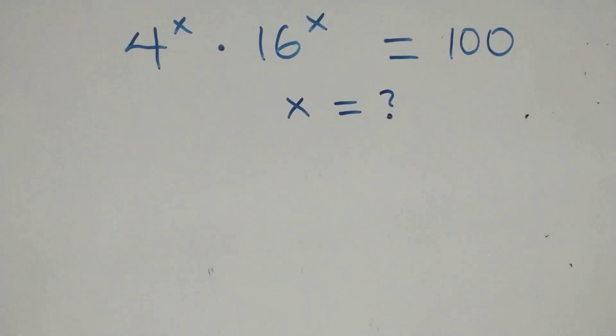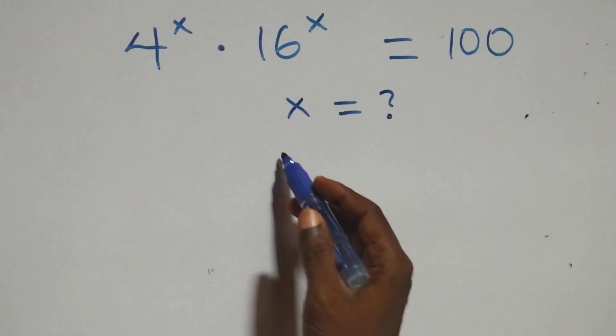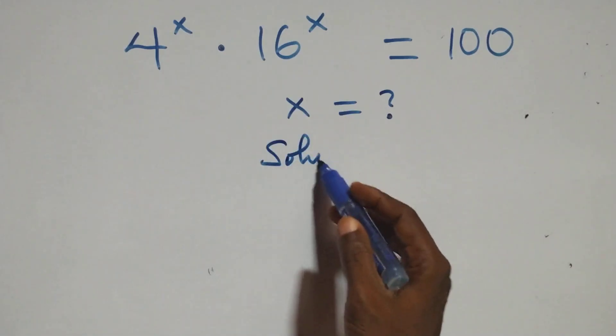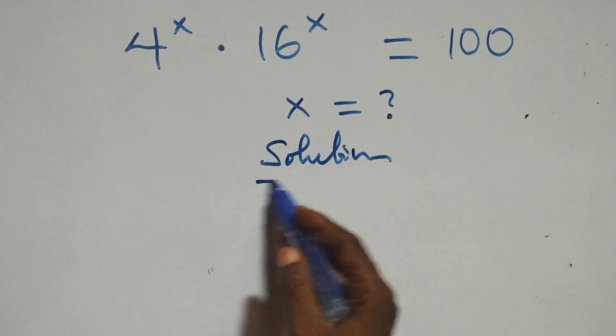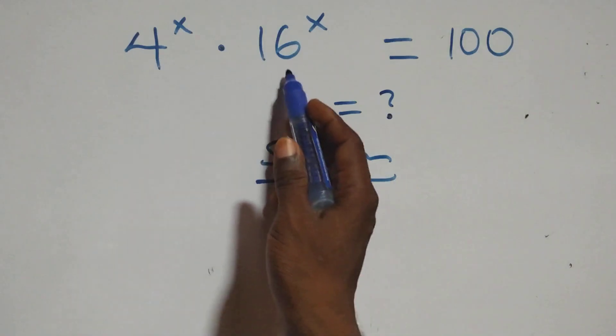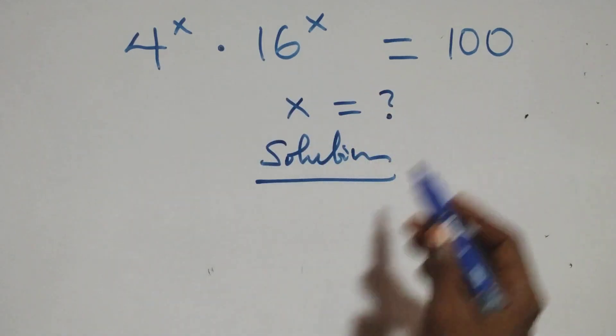Hello, you are welcome. How to solve this nice exponential equation. What we have here is 4 raised to the power x times 16 raised to the power x equals to 100.